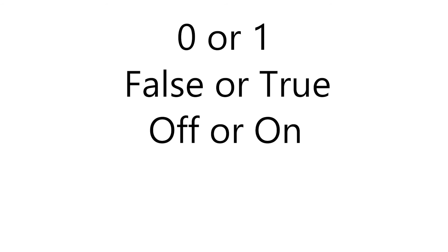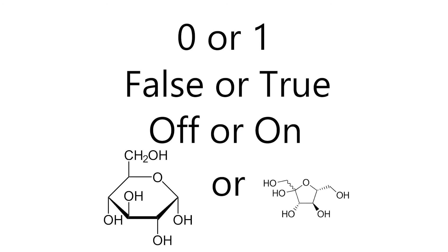So at the chemical level, going back and forth between glucose and fructose, or any structural isomers, can represent binary data. Now, this is not the only form of chemical manipulation studied by nanotechnologists.